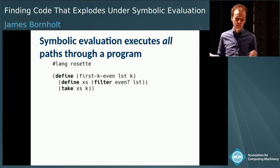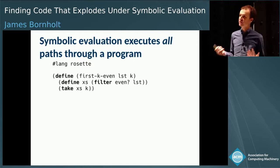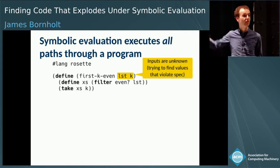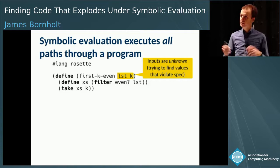The way it works is obvious: it takes the list, filters it down to only the even elements, and takes the first k of those and returns them. When the inputs are concrete, you can probably run this in your head. But in the context of symbolic evaluation, we often don't know the inputs. If you're trying to verify this function, you want to prove a property for all possible inputs, not just one concrete input.